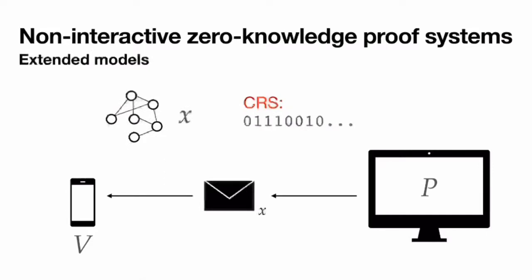This is why people consider extended models. One popular model is the CRS model — common reference string — where a trusted third party samples a string from a specified distribution and makes it publicly available. This isn't achievable in the standard model since we can't trust either party to generate the string, but if we assume the string can be obtained somehow, we can have a protocol where the prover sends only a single message to the verifier.